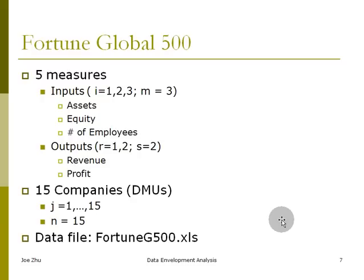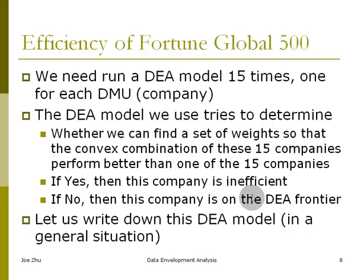So this is the information on the data set that's provided in the book. It's the Fortune 500 global companies. We have five measures. You have three inputs: assets, equity, number of employees. So i goes from one to three. And we have two outputs. And the data set has 15 companies. Of course, if you go to Fortune Magazine, there are more than 15, but we select the top 15 companies. And we're going to use that file throughout the case here to demonstrate how you can build the models in a spreadsheet.